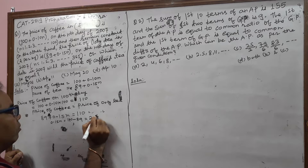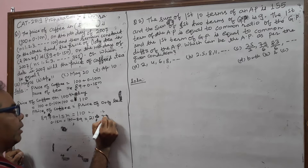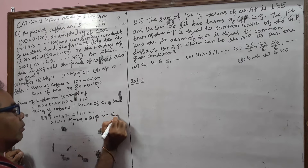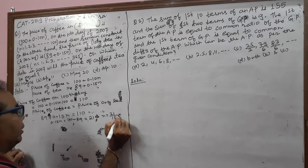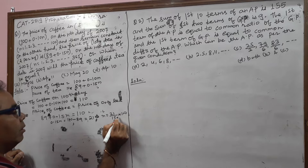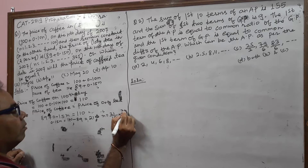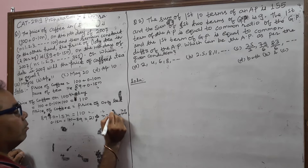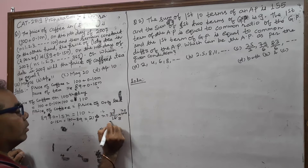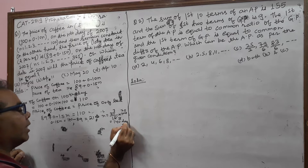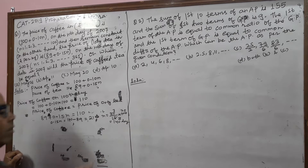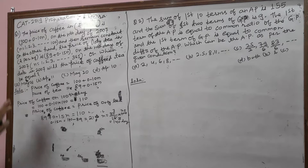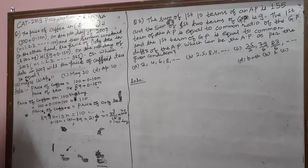Therefore, N equals 21 divided by 0.15, which is 21 × 100 divided by 15, giving N equal to 140. On the 140th day, both the price of tea and coffee are equal in 2007.